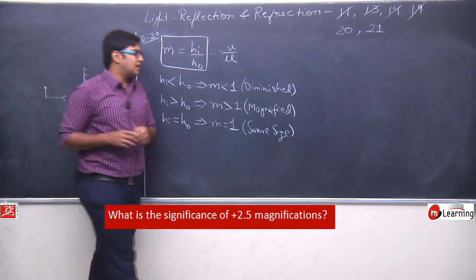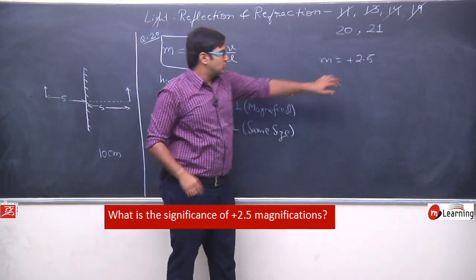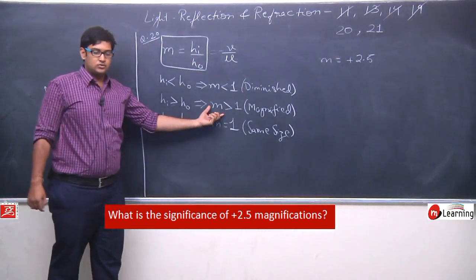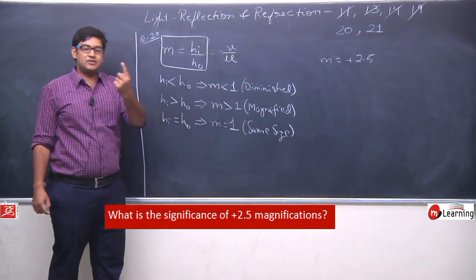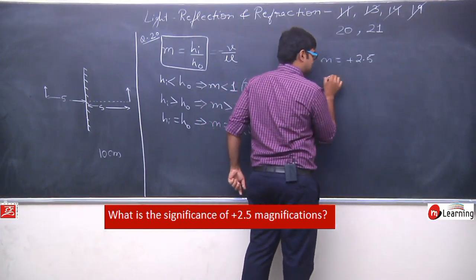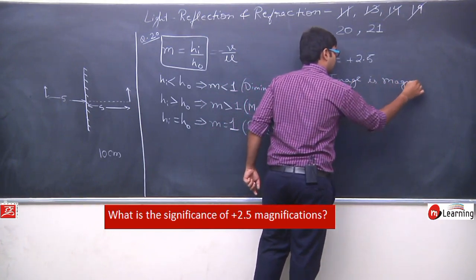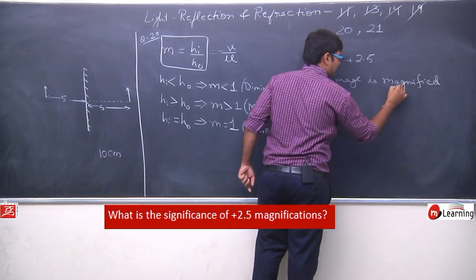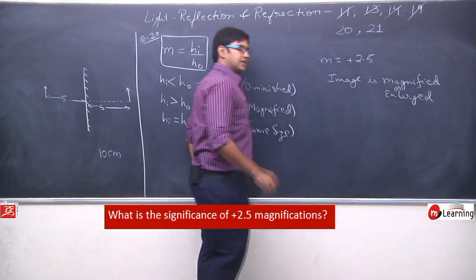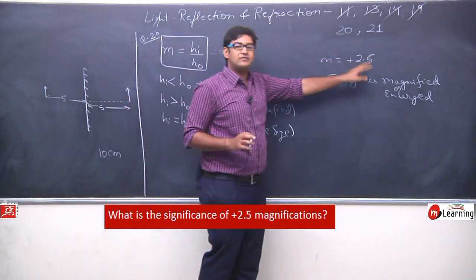The value of m given here is plus 2.5. So 2.5 is a value greater than 1 — it is greater than 1. If this value is greater than 1, it means the image is magnified or enlarged. The image that forms will be considerably larger than the object — 2.5 times larger.